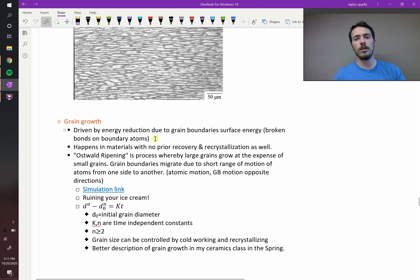The process of grain growth sometimes gets called Ostwald ripening. And again, that's the process where big grains grow at the expense of small grains.